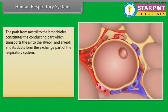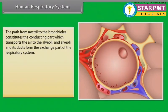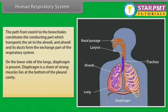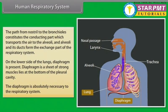The path from nostril to the bronchioles constitutes the conducting part, which transports the air to the alveoli. The alveoli and its ducts form the exchange part of the respiratory system. On the lower side of the lungs, the diaphragm is present. The diaphragm is a sheet of strong muscles that lies at the bottom of the pleural cavity and is absolutely necessary to the respiratory system.